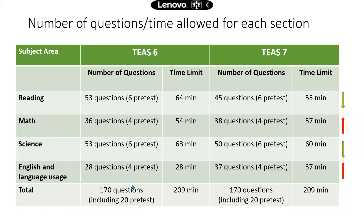Overall, the total number of questions still doesn't change. For TEAS 7, there are 170 questions, which includes 20 pre-test questions that are not graded. I think this table is better than the one on the TEAS website, because the official table does not tell you the number of pre-test questions — so you might think you're getting 150 questions in 209 minutes, but you are actually getting 170 questions, and 20 of them are randomly selected and not graded, so they don't go towards your total score.